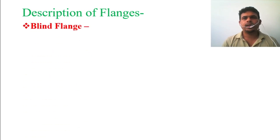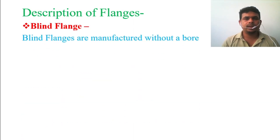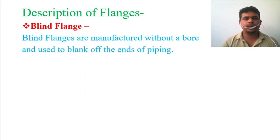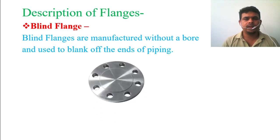The next type of flange is the blind flange. Let's see what it looks like and what its function is. Blind flanges are manufactured without a bore and are used to blank off the end of a pipe. They are made without any hole or bore, and their purpose is to blind the end of a pipeline.